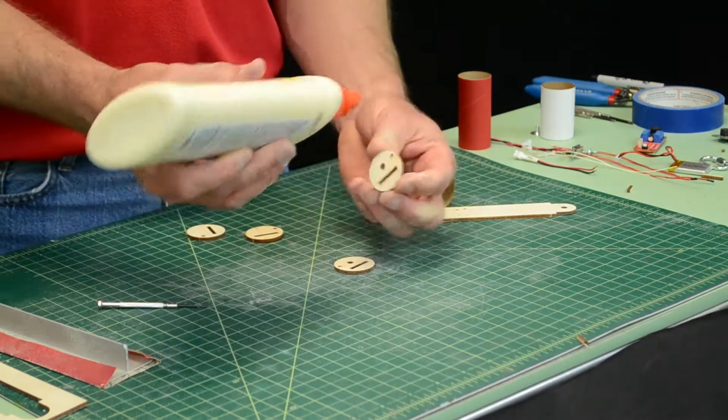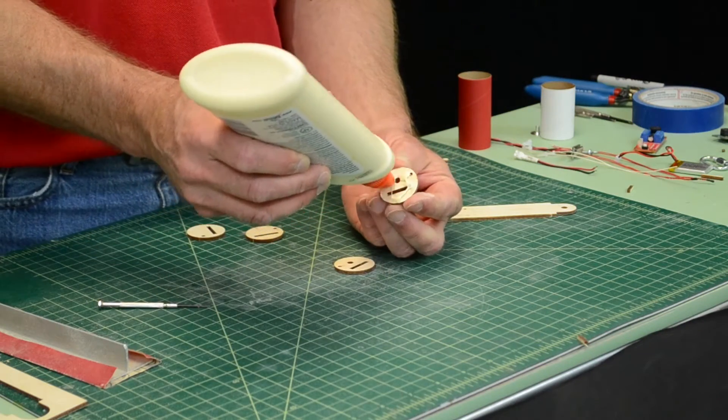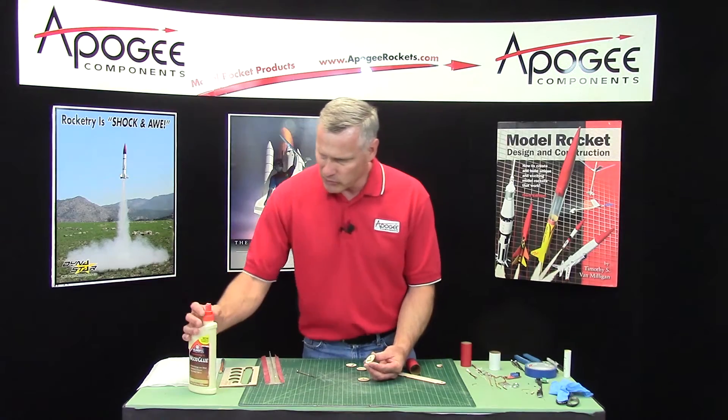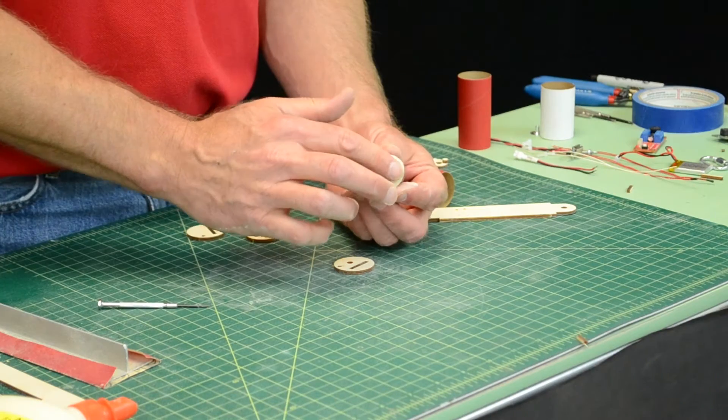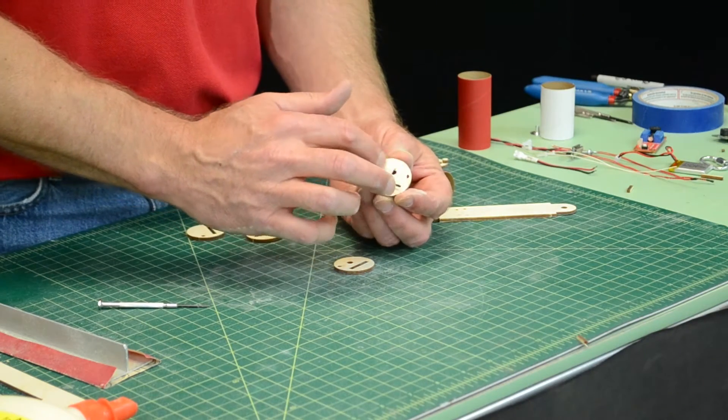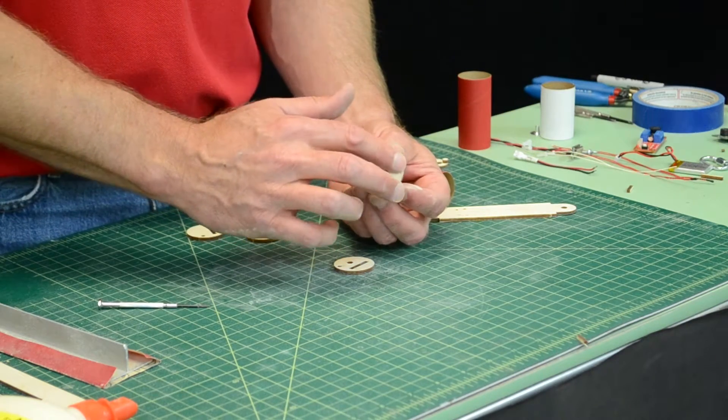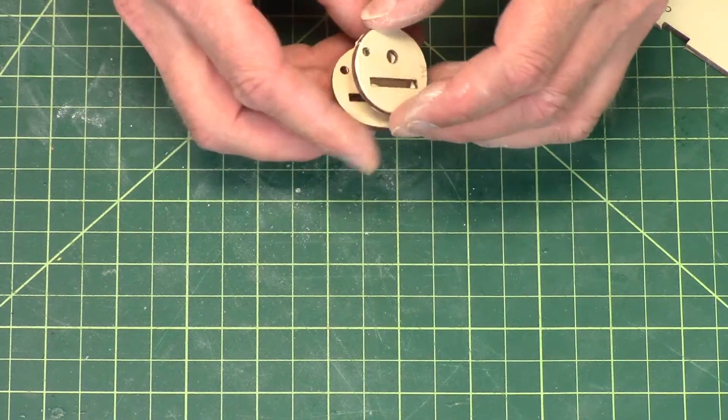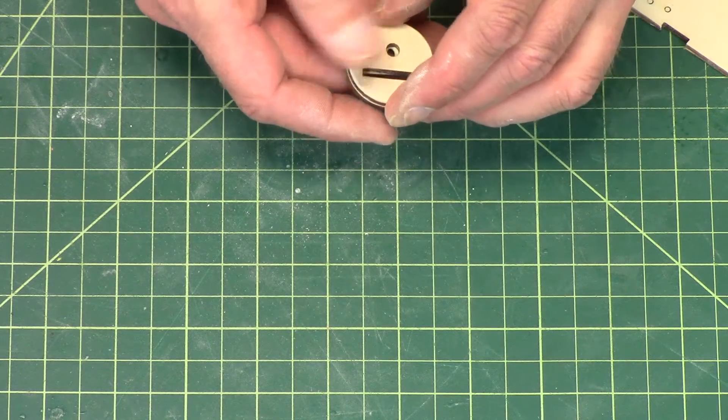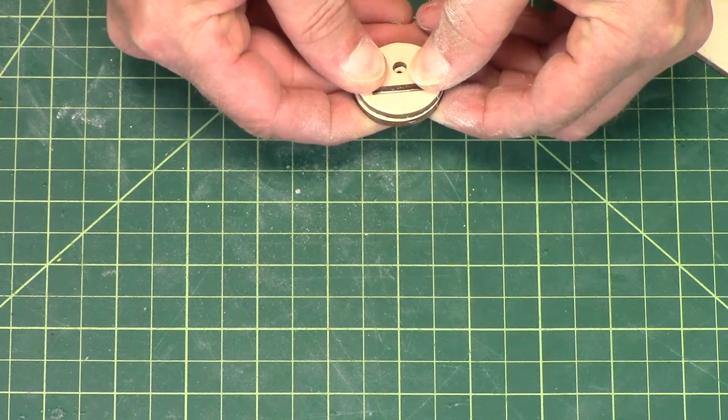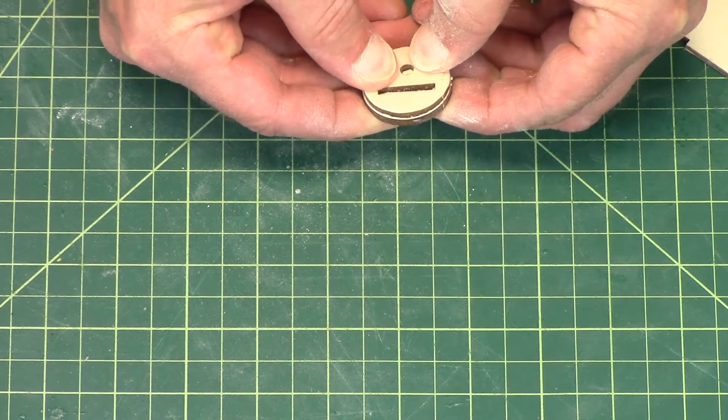I'm going to take some wood glue and smear it on the back of here. You're going to want to have some paper towels ready. This gets messy. Just line up your holes like that. Give a good squish. You want to squish all that glue out.